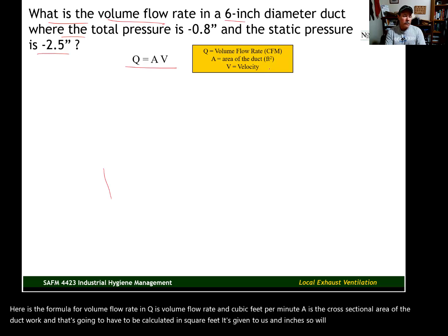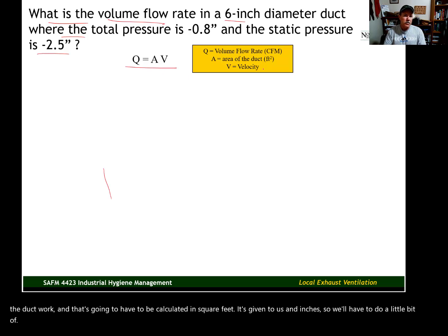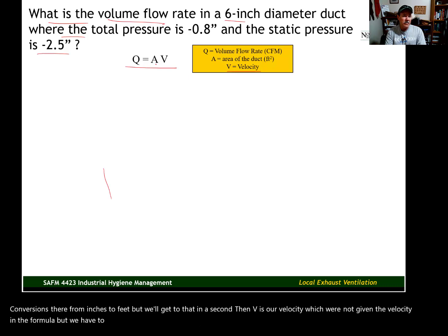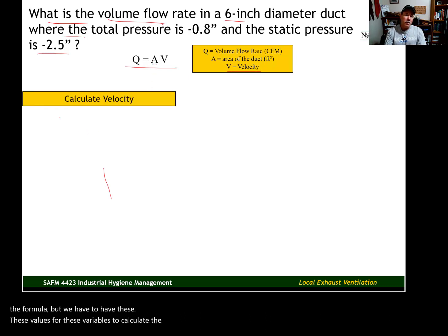It's given to us in inches, so we'll have to do a little bit of conversions there from inches to feet. But we'll get to that in a second. And then V is our velocity, which we're not given. But we have to have these values for these variables to calculate the flow rate. So, the first step is to come up with velocity. Calculate the velocity in this duct work. And here's our formula for velocity.